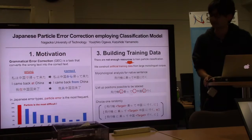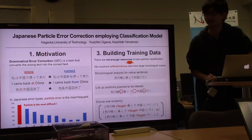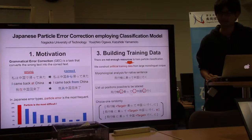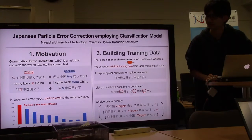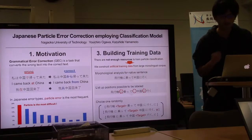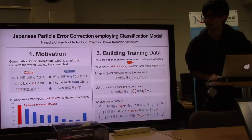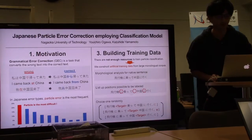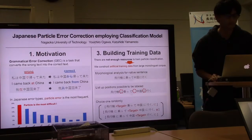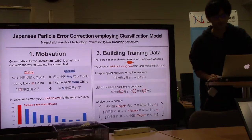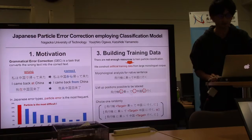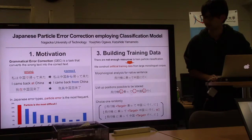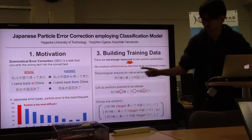Our method uses a simple CNN classification model and doesn't need learner's corpus. At first, I talk about our motivation. Grammatical error correction is a task that converts the wrong text into the correct text, like this example.